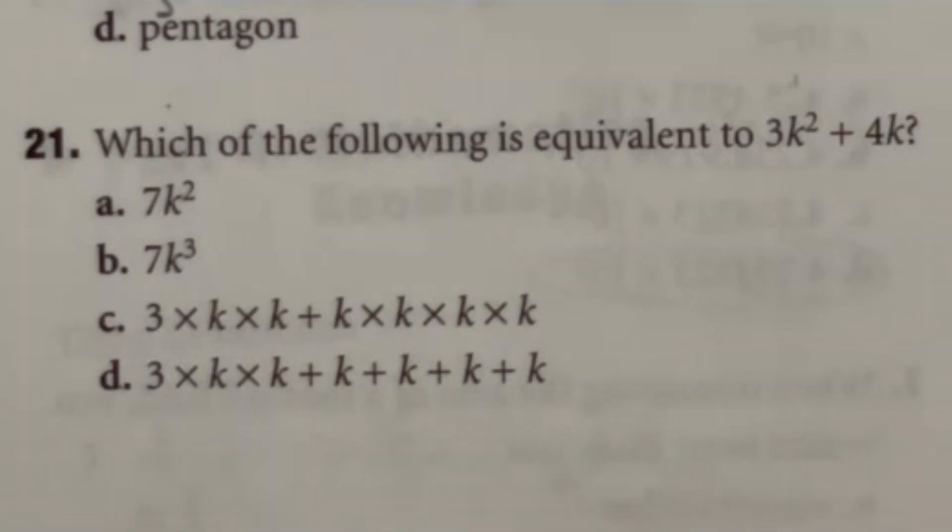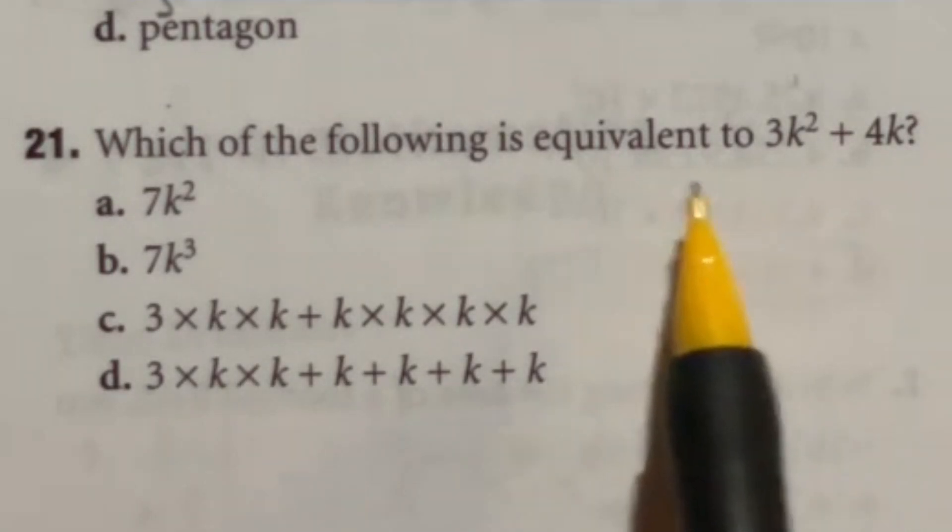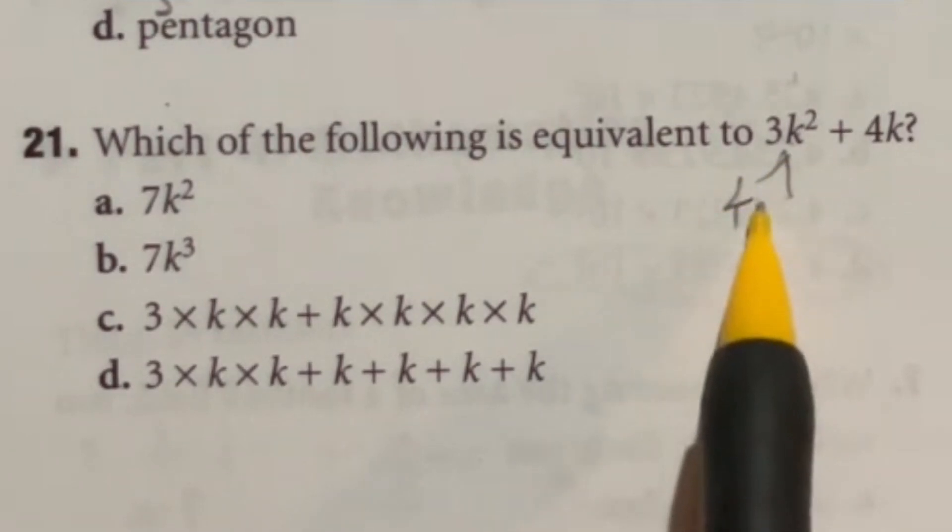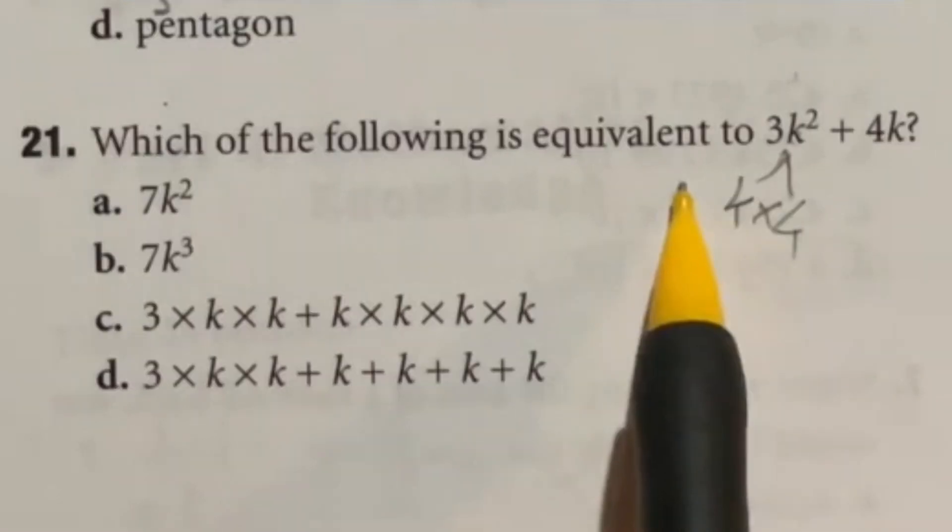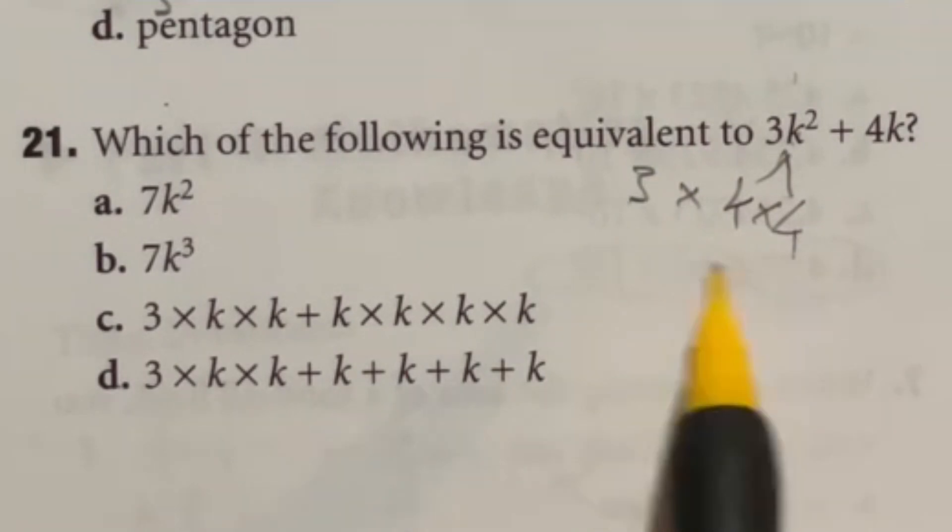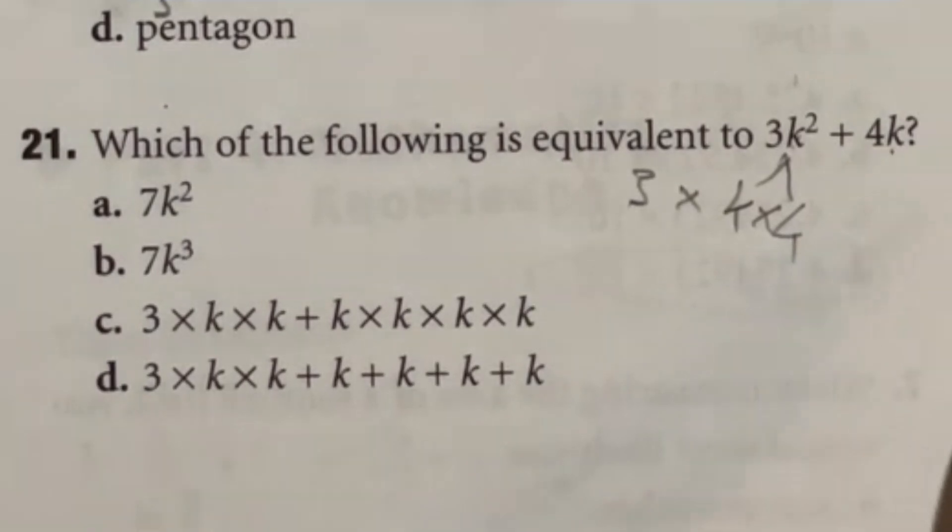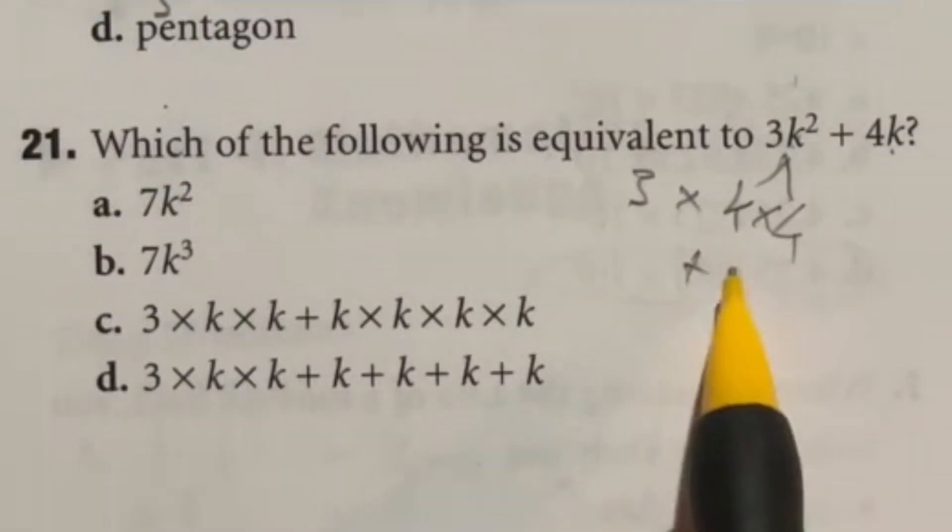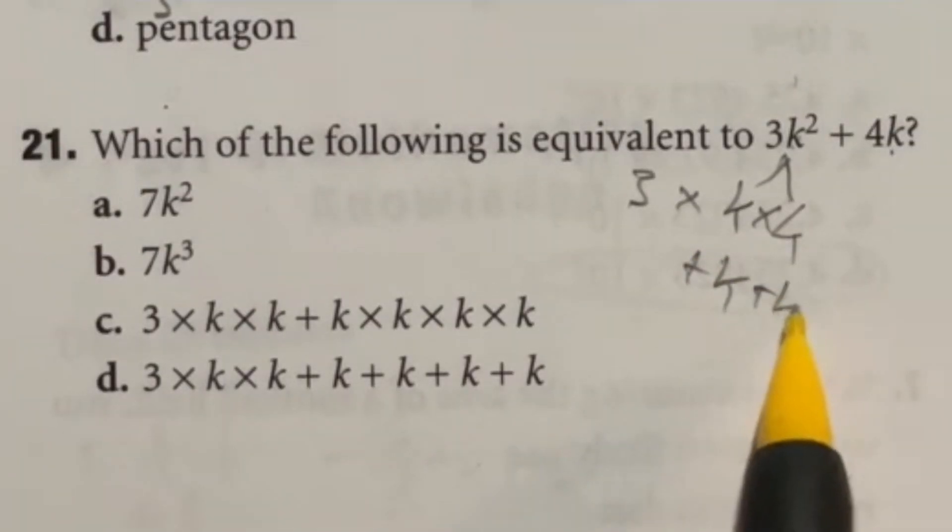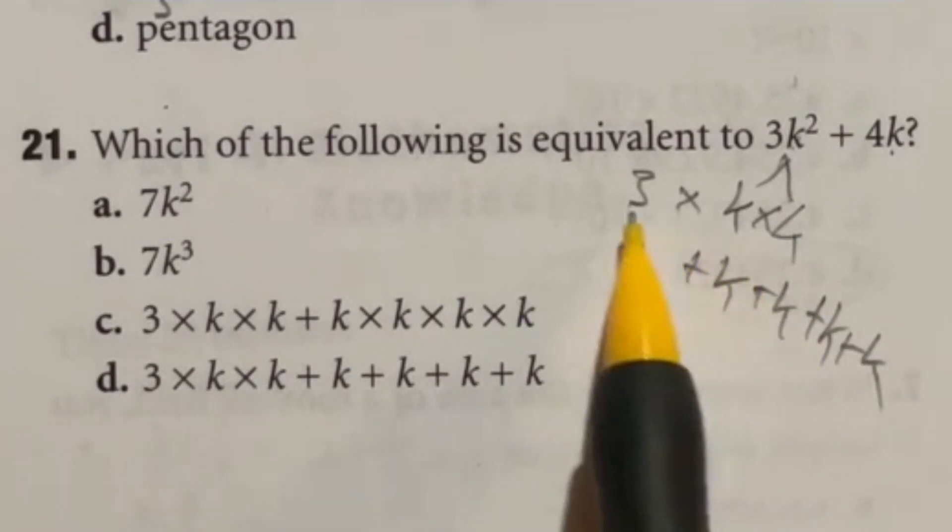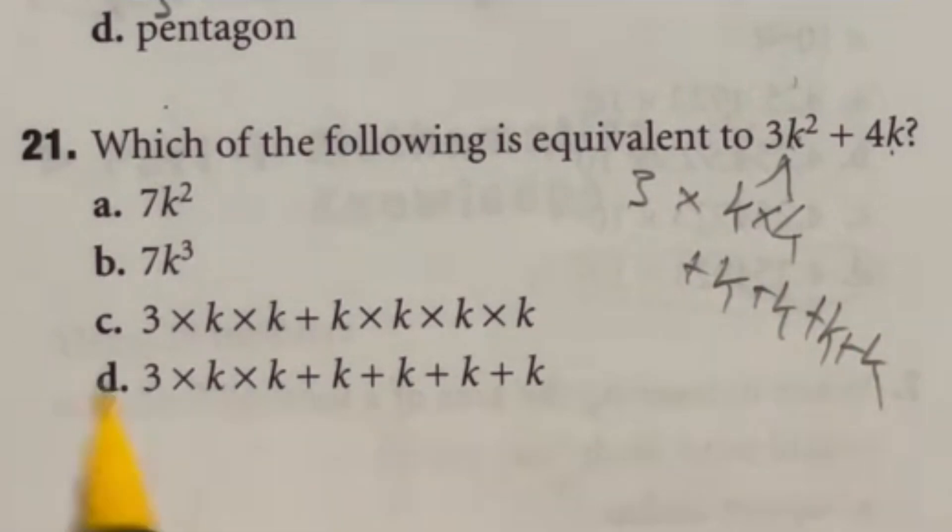So this question is kind of like breaking down the basics of algebra here. It says, which of the following is equivalent to 3k squared plus 4k? So what does it actually mean to square k? Well, that would imply that you are taking 1k times another k and then you're multiplying that by 3. And then what about adding 4k? Well, that means that you would be adding k 4 times. So in other words, that would be adding a k plus another k plus another k plus another k. So in this case, when we're looking at what I have drawn out right here, that means our answer is D.